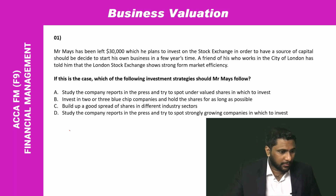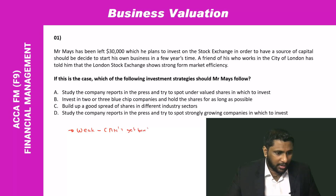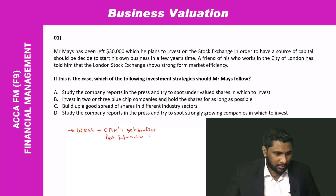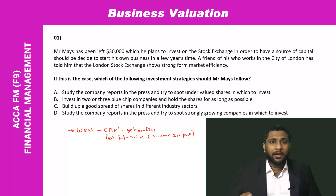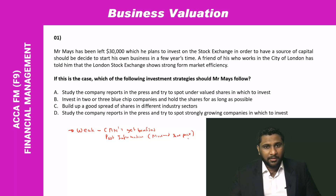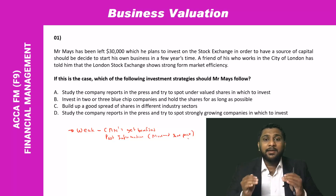The first one is weak form efficiency. If you can't get benefited by having past information — like the movement in share prices — that market will be called weak form efficient. If you have past transactions, past details, past share price movements, and you can't get benefited from those, that efficiency level is called weak form efficiency.